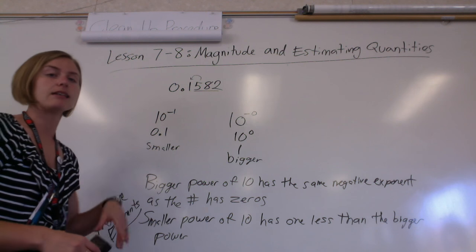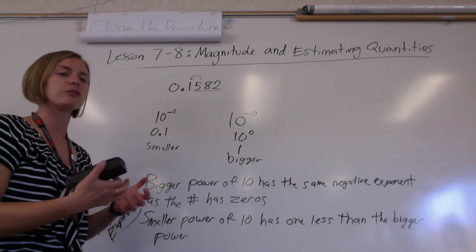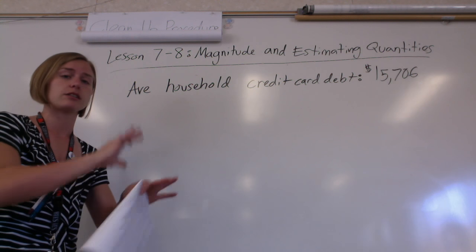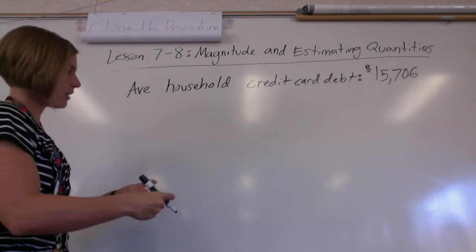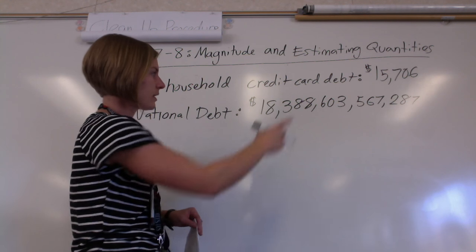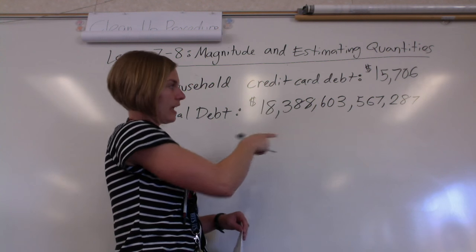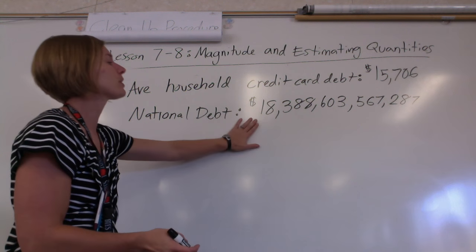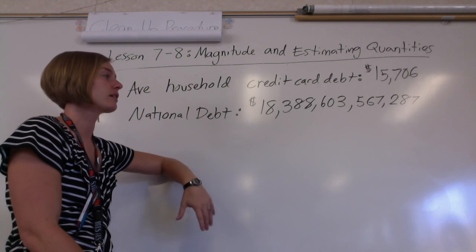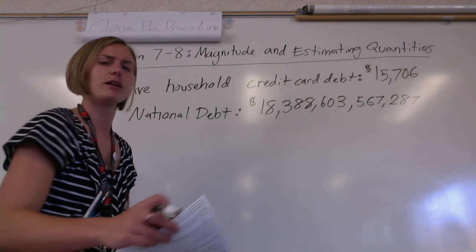Now we're going to use magnitudes — powers of 10 — to estimate really really big numbers so that we can compare them. It makes it so your calculations deal with just the powers of 10, so you don't have to deal with the real numbers because sometimes they're really annoying. The average household owes $15,000 from credit cards alone — not mortgage and student loans, just from credit cards. The national debt is $18,388,603,567,287, and that's probably gone up since I looked it up.